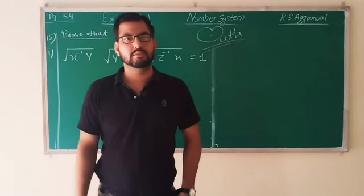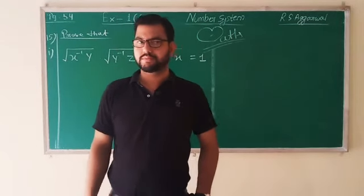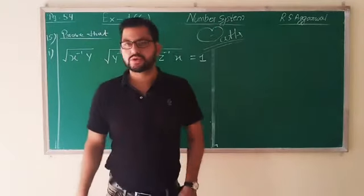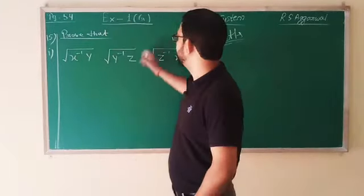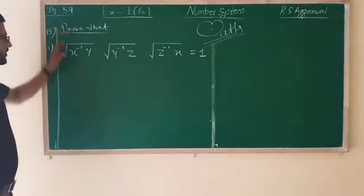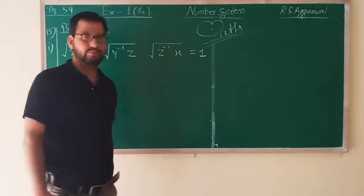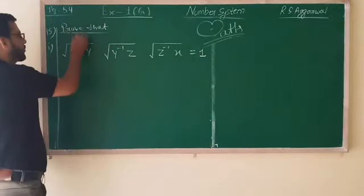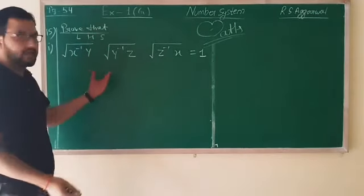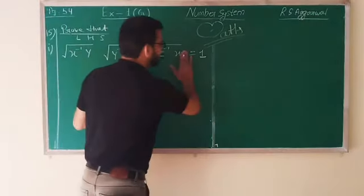Let's continue our topic number system, and today's subtopic is exponent. The question is from Exercise 1G, number 15. Here the question is proving - prove that this value is equal to 1. In proving questions we directly start with the left hand side.